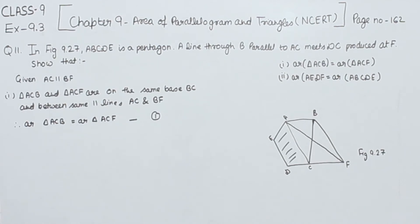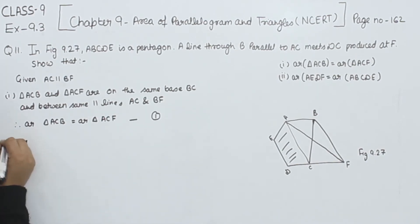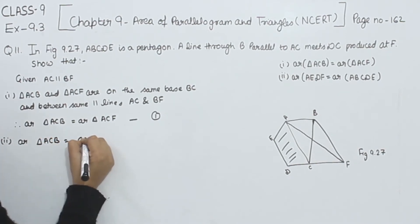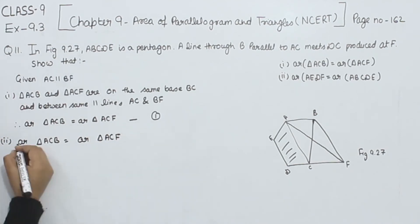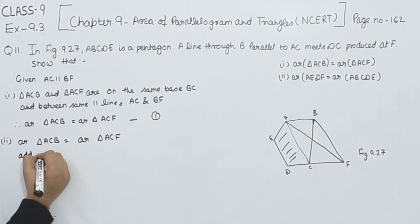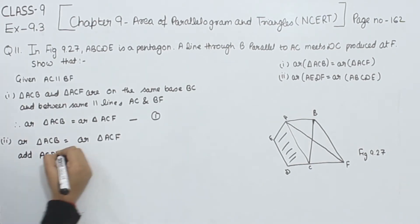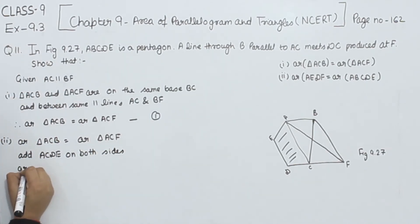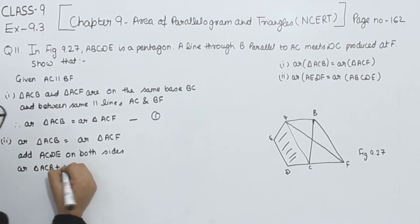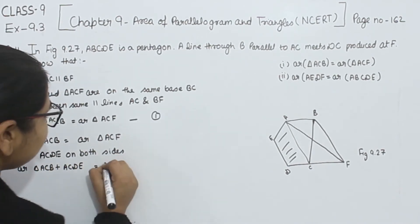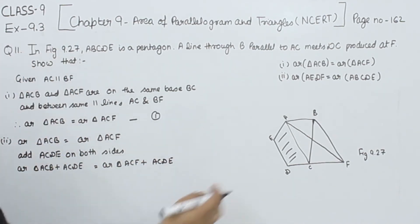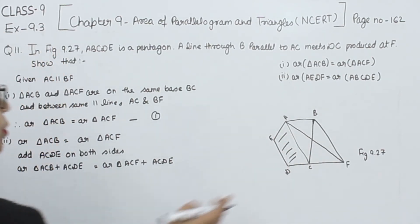Now comes part two. In part two, we already have from equation number one that the area of triangle ACB is equal to the area of triangle ACF. Now we are going to add parallelogram ACDE on both sides.